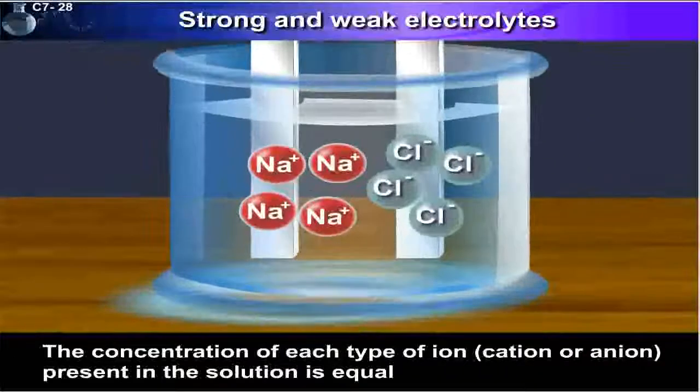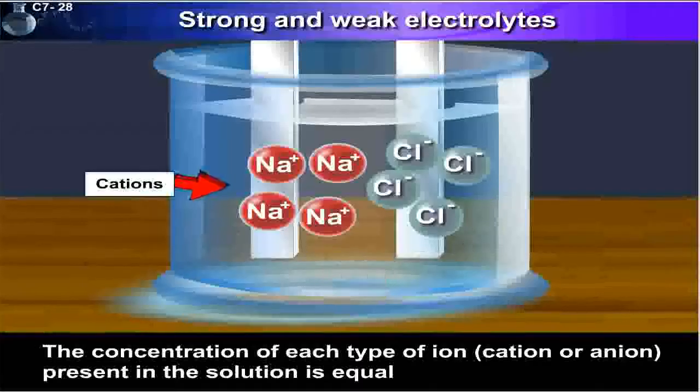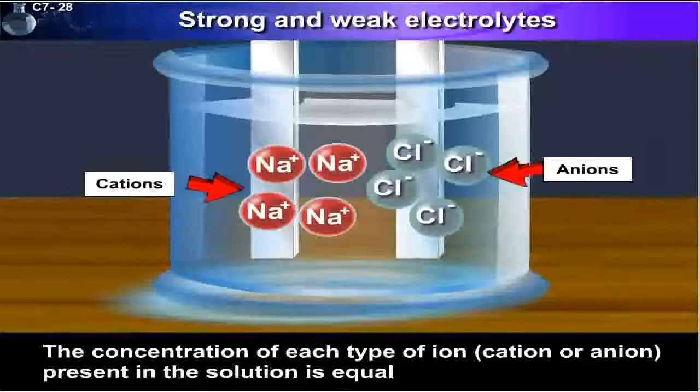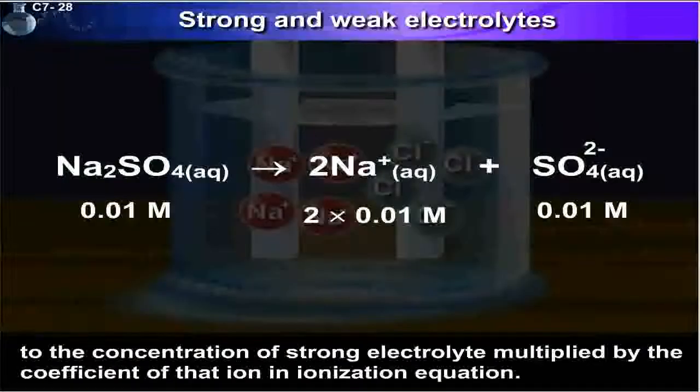The concentration of each type of ion, that is cation or anion present in the solution, is equal to the concentration of strong electrolyte multiplied by the coefficient of that ion in the ionization equation.